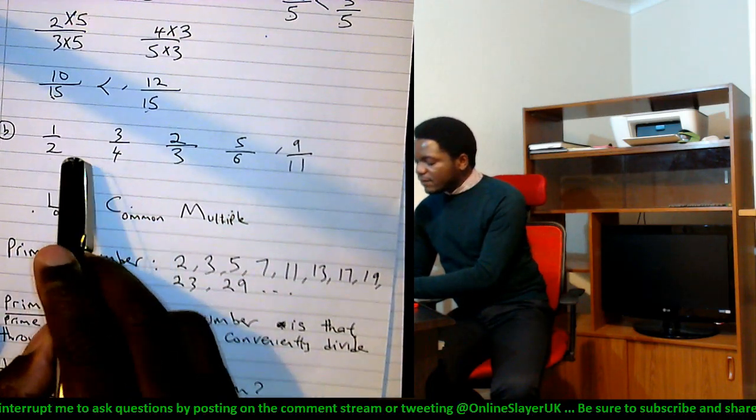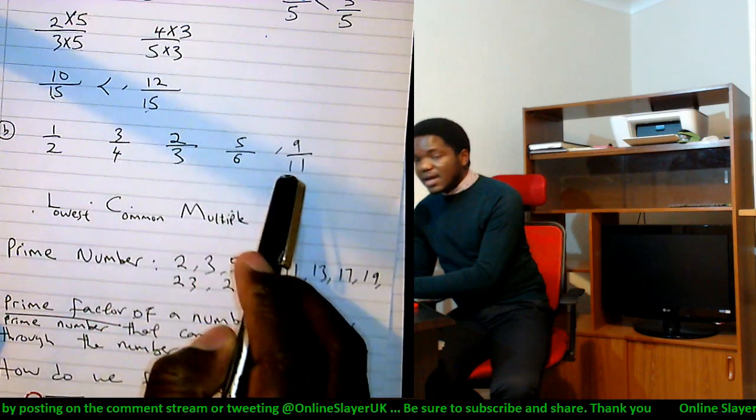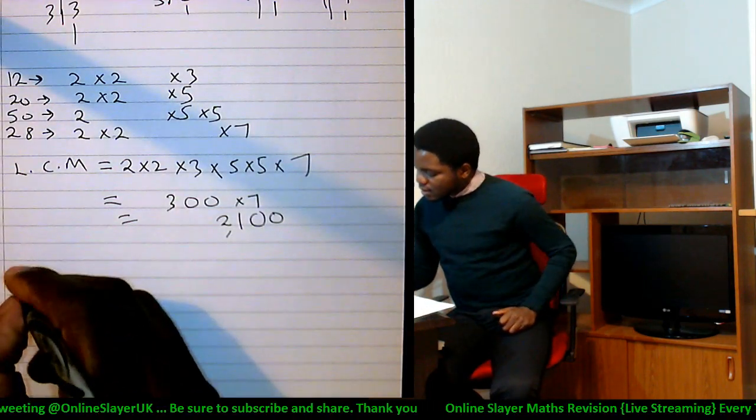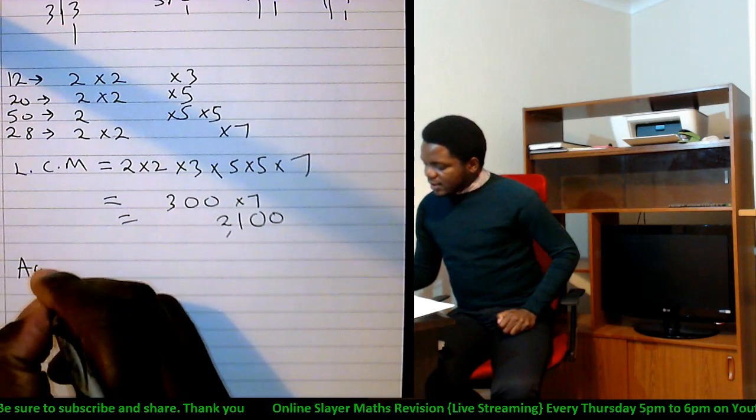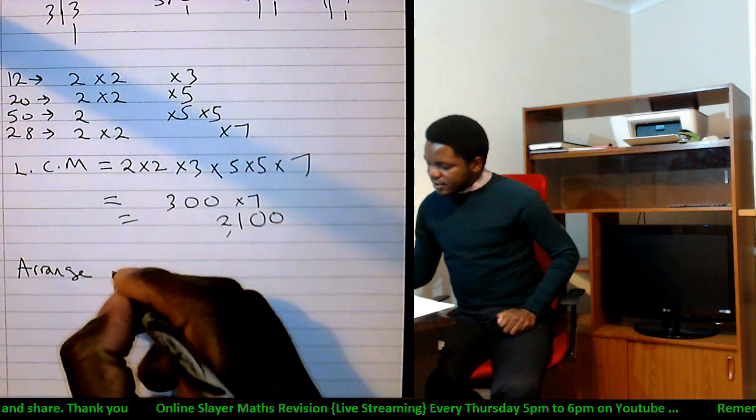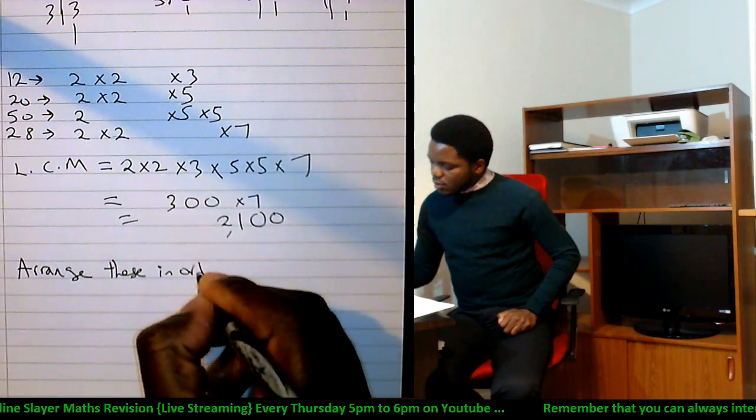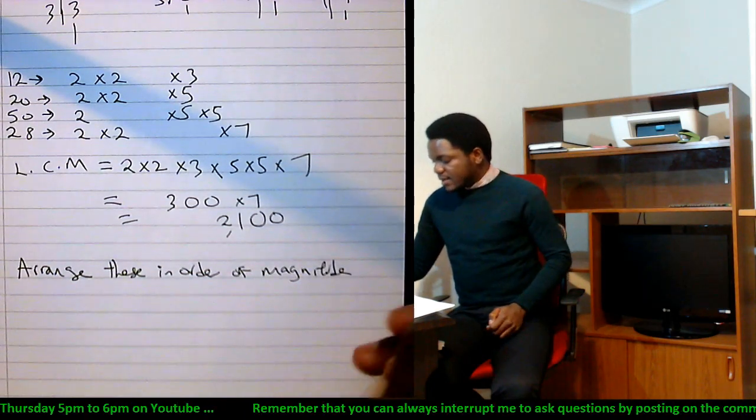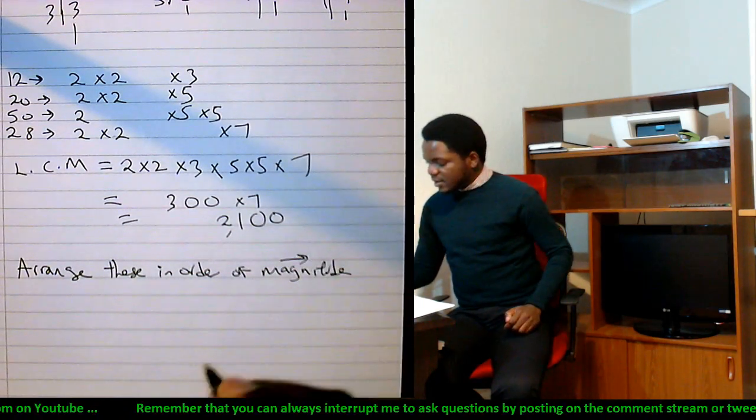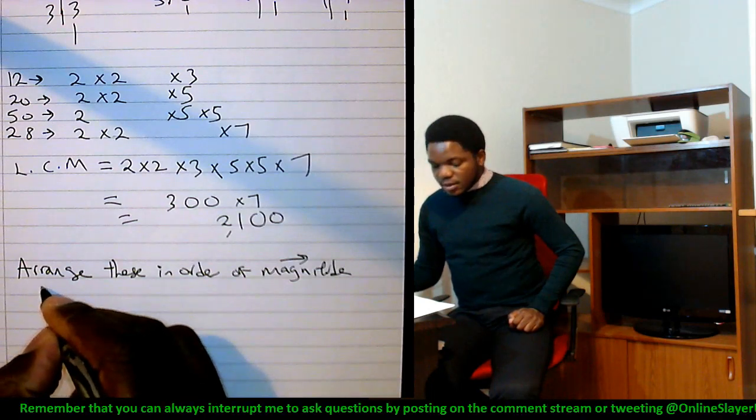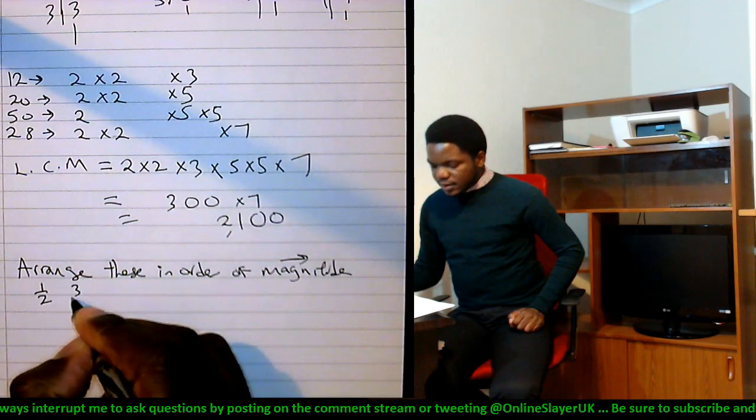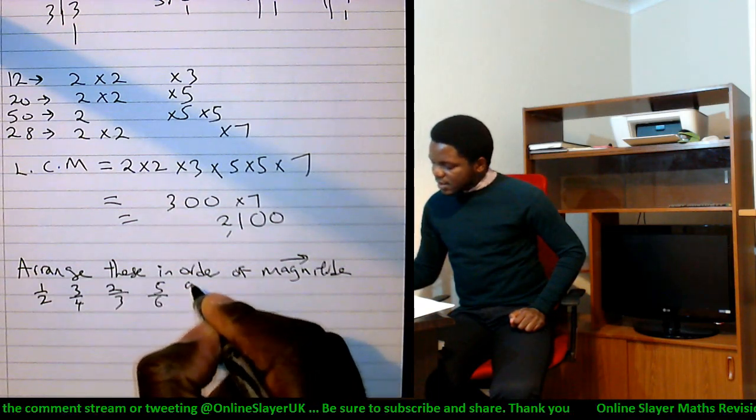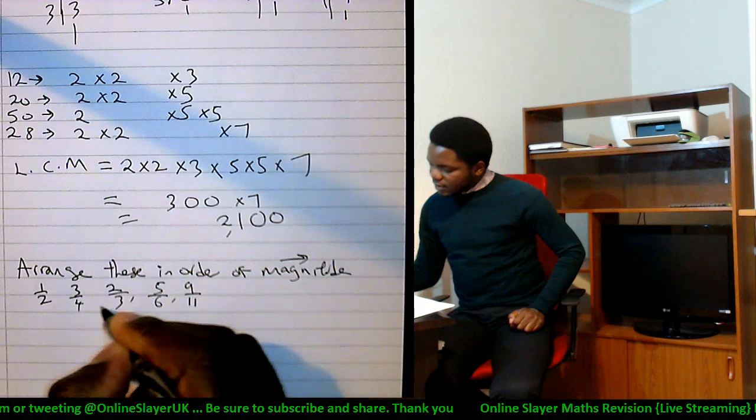So how do we do that? First thing to do, find the LCM of two, four, three, six, and eleven. Let's do that, shall we? So again, here's the question: arrange these in order of magnitude, increasing magnitude. One over two, three over four, two over three, five over six, and nine over eleven. These five numbers.